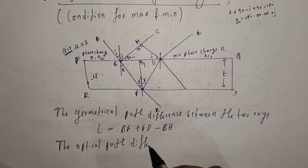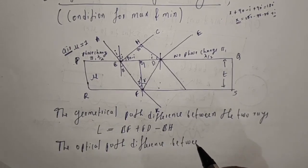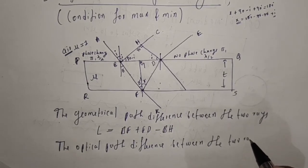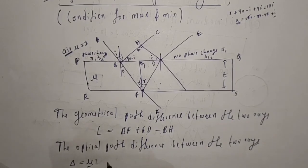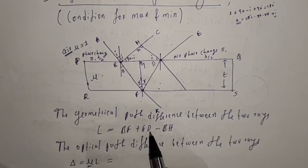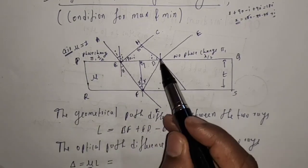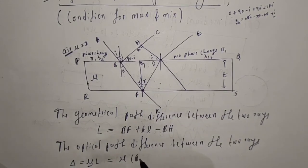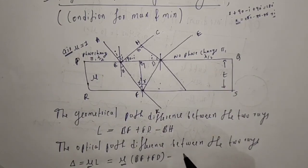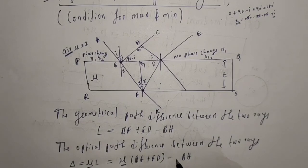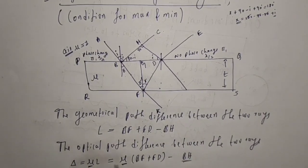Now let us write the optical path difference between the two rays. The optical path difference delta equals mu times L. Since BF plus FD travels through the medium, we write mu times (BF plus FD). For BH, the refractive index of air is 1, so we write only BH. Therefore, delta equals mu(BF plus FD) minus BH.